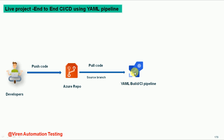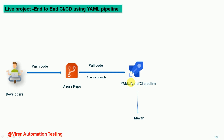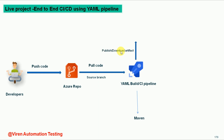Now we have pulled the code from the source code repository and we want to build it. To build the code we need a build management tool, and for that I am going to use Maven. Maven is a build management tool which will help us build the code. We will add Maven as a task in the YAML CI/CD pipelines. The pipelines run on the Microsoft hosted agent, and on that Microsoft hosted agent it is going to build the code.